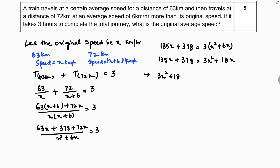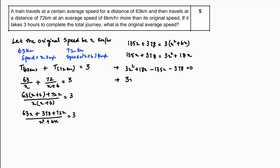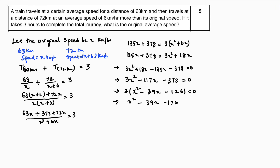Simplifying: 3x² - 117x - 378 = 0. Taking 3 as common: x² - 39x - 126 = 0. Dividing through by 3 gives x² - 39x - 126 = 0.